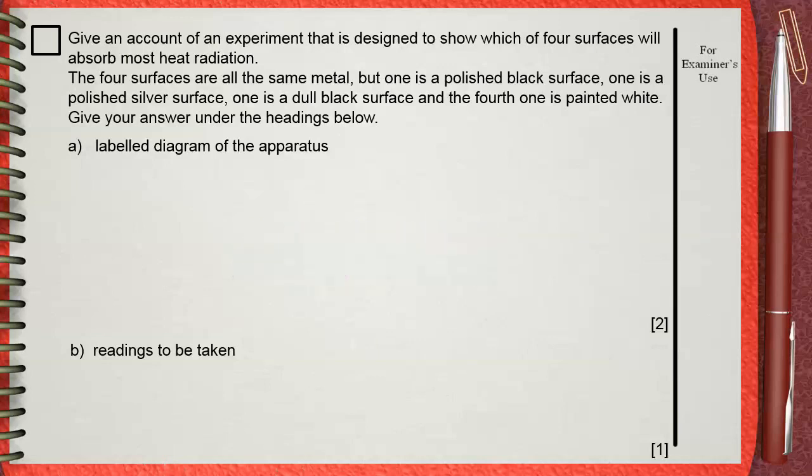Actually, we have many experiments for this. One of the most important apparatus that are used for this purpose is the Leslie Cube. This is a hollow cube which has an opening. In this opening, we can put boiling water. This is our source of heat.